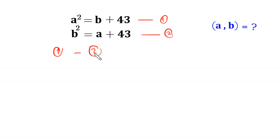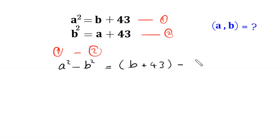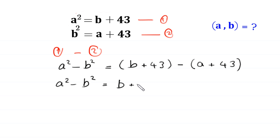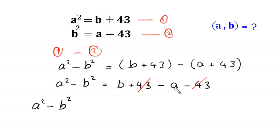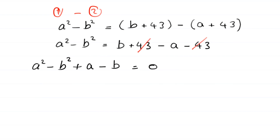From equation 1 we subtract equation 2, so this becomes a squared minus b squared is equal to b plus 43 minus a plus 43. Removing brackets, the positive 43 and negative 43 cancel out. Moving terms, a squared minus b squared plus a minus b equals 0.